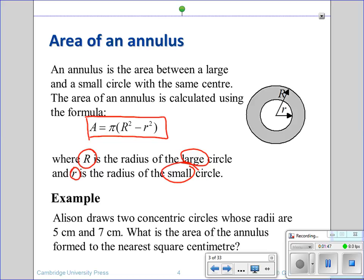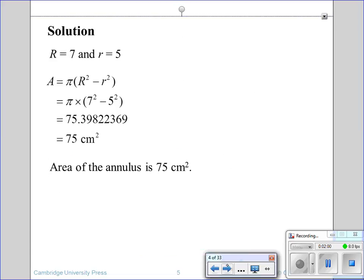So, Alison's got two circles, concentric circles, with radiuses of 5 and 7. What is the area to the nearest square centimetre? So, let's have a look. How do we go through and solve that?